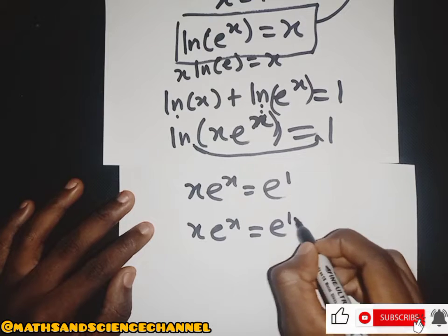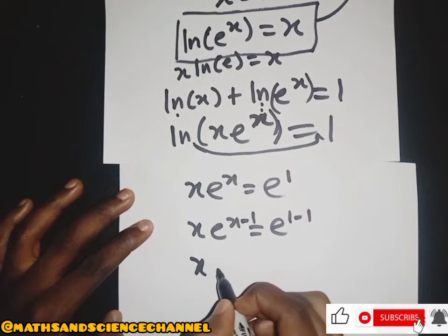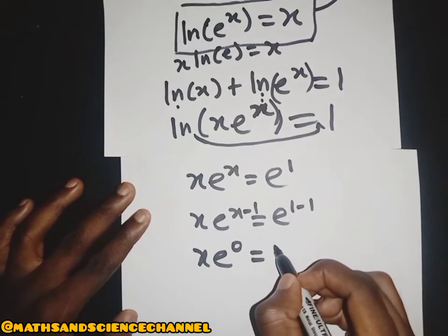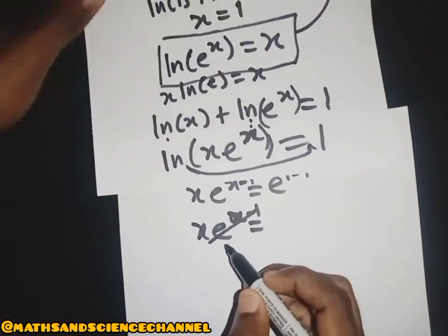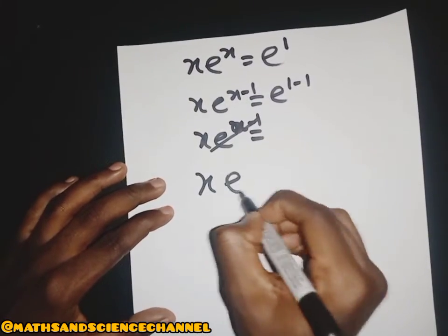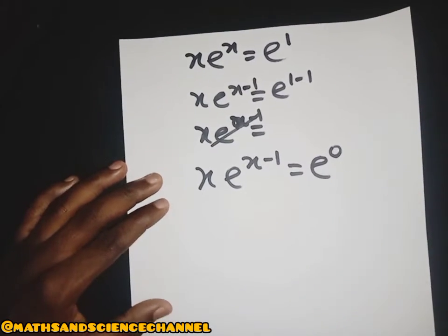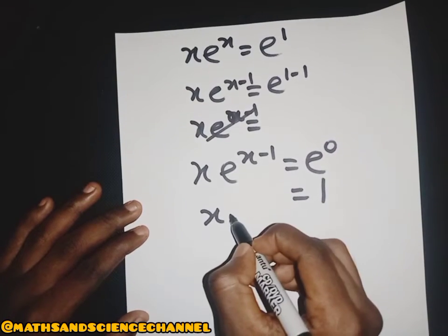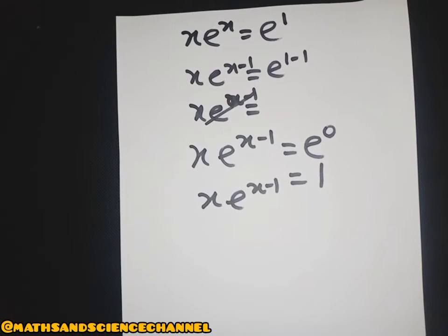From here, we subtract 1 from both exponents. Subtracting 1 from both sides of the exponent gives us x^(s−1) = e^0, which equals 1. So we have x to the power (s−1) equal to 1.